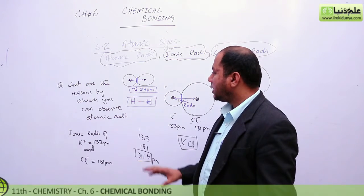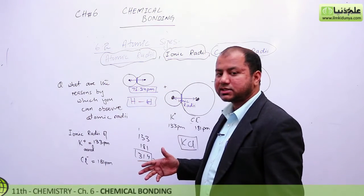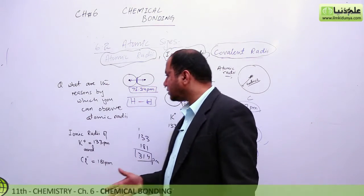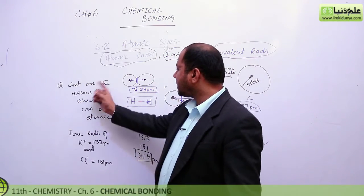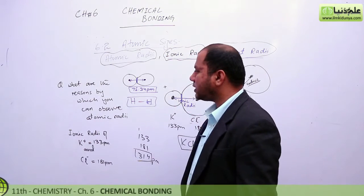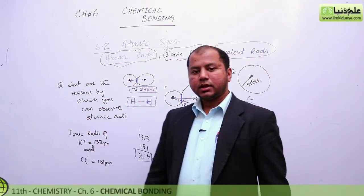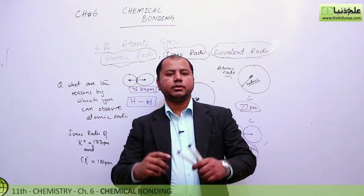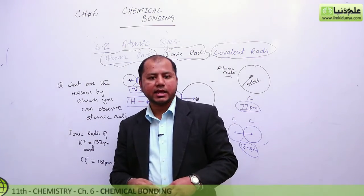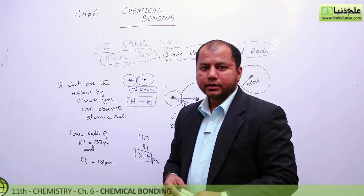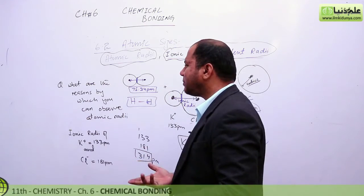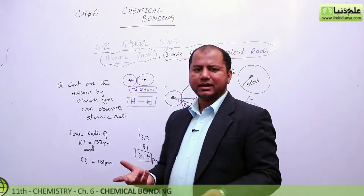I want to discuss one more frequently asked question: what are the reasons by which you can observe atomic radii? How do you know the boundary of an atom if you've never seen one? The answer is there are no sharp boundaries of any atom.